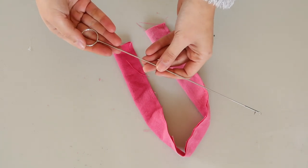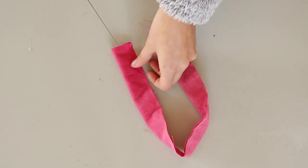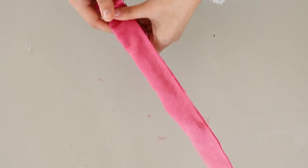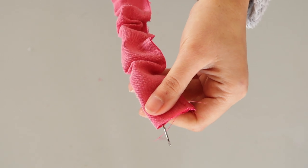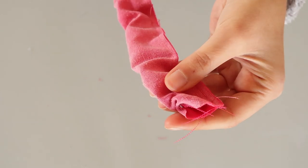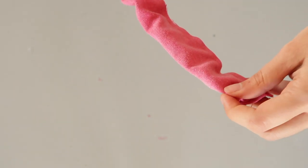Turn the tube right side out. I used a loop turner for this, which is essentially a wire with a hook at the end to help you pull the fabric. You can also do it by pinning a safety pin to one end and pushing the pin through the tube.